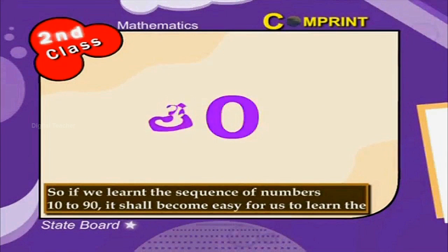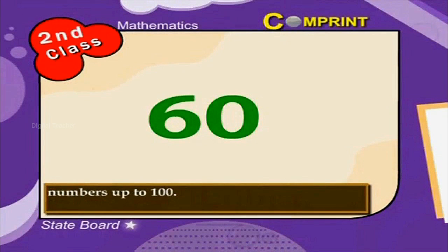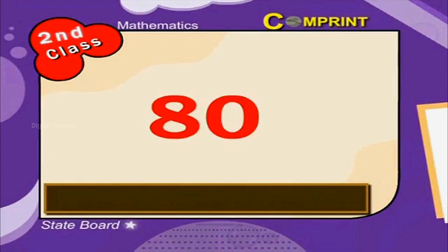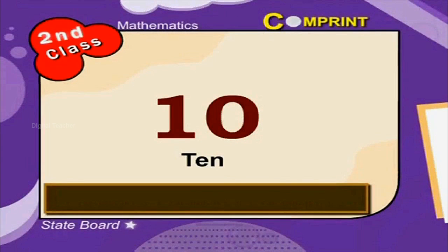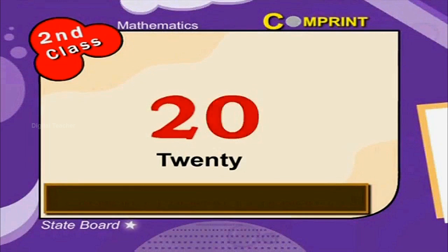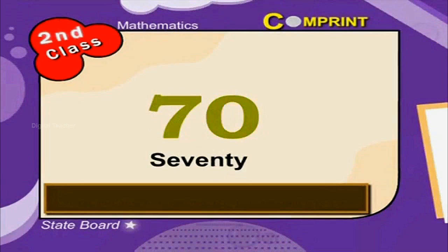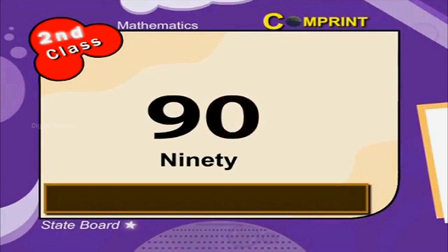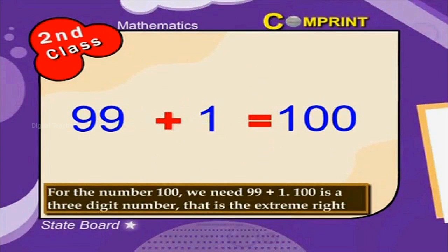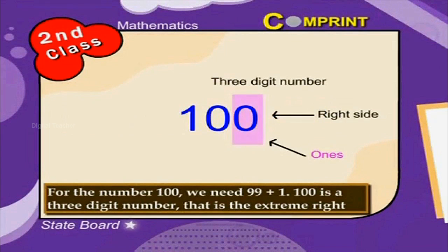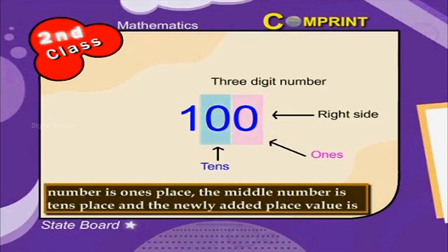If we learn the sequence of multiples of ten — 10, 20, 30, 40, 50, 60, 70, 80, 90 — it becomes easy to learn numbers up to 100. For the number 100, we need 99 plus 1. 100 is a three-digit number: the extreme right place is ones, the middle is tens, and the newly added place value is hundreds.